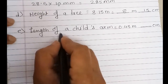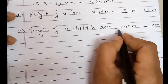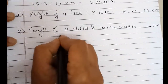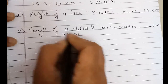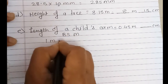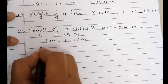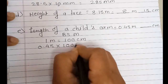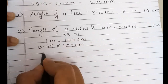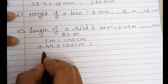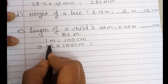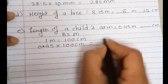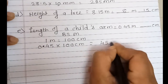Now the solution of E. The length of a child's arm is given as 0.45 meters. We have to convert that into centimeters. Big to small — multiplication. As we know, 1 meter equals 100 centimeters. So we multiply the decimal by 100, which moves the decimal point 2 places to the right, giving us 45 centimeters.